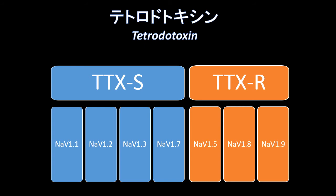ナトリウムチャンネルには多くの種類があります。これらは大きく2つに分類することが可能で、1つはTetrodotoxin Sensitive（感受性）またはTTXS、もう1つはTetrodotoxin Resistant（抵抗性）またはTTXRです。ご存知のように、リドカインなどの局所麻酔薬はナトリウムチャンネルの阻害薬で、ナトリウムチャンネルを阻害することによってその部分で活動電位が生じないようにします。通常、末梢神経にはTTXSが多く発現されていますが、末梢神経が感作を起こした時にはTTXR、特にナトリウムチャンネルボルテージ1.8などが増加します。